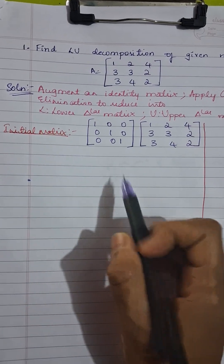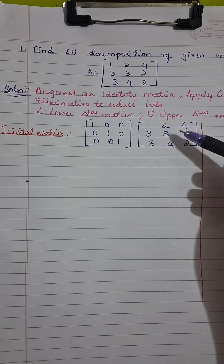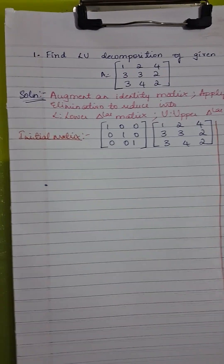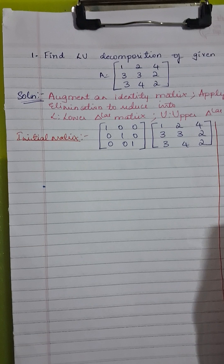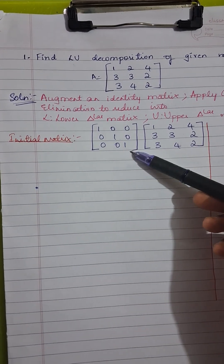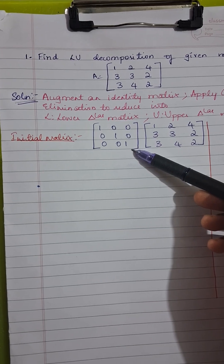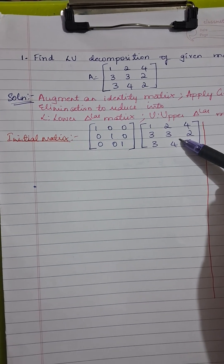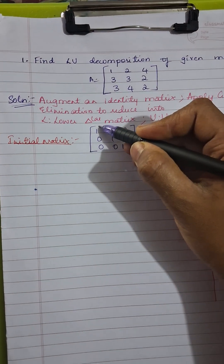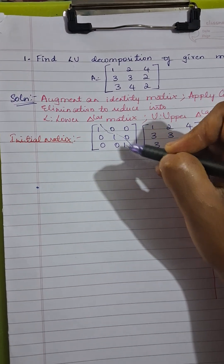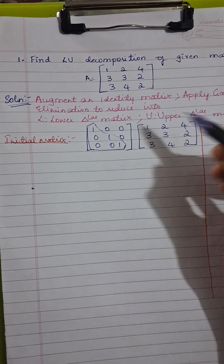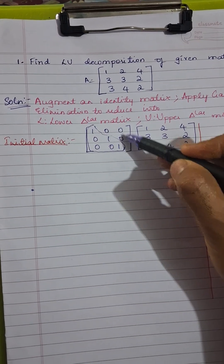The first step is to write the initial matrix. This is matrix A, which we augment with the identity matrix I of the same size. We will apply Gaussian elimination so that this matrix is reduced into a lower triangular matrix. In a lower triangular matrix, all the values below the diagonal will be non-zero and all the values above the diagonal will be zero.